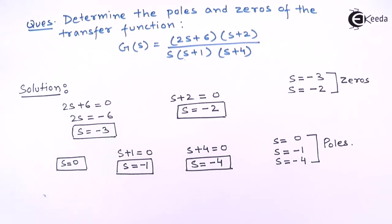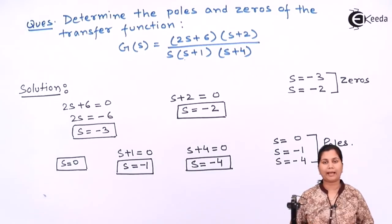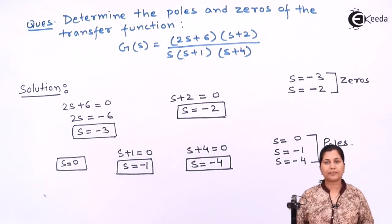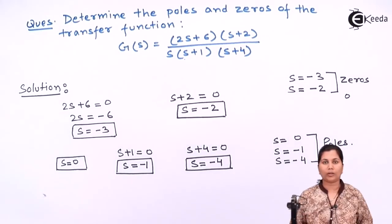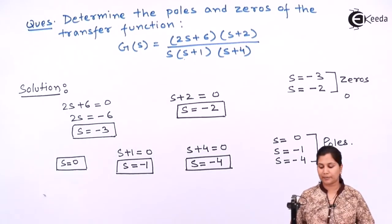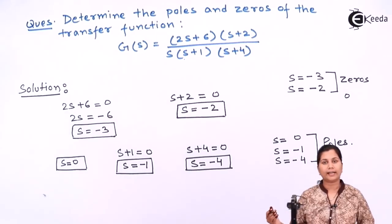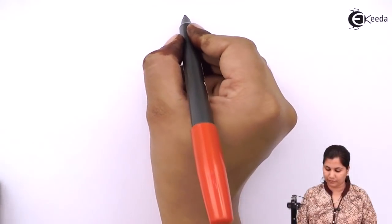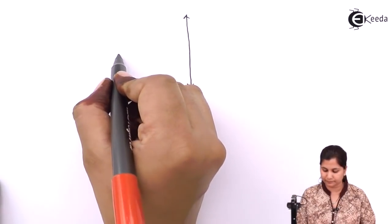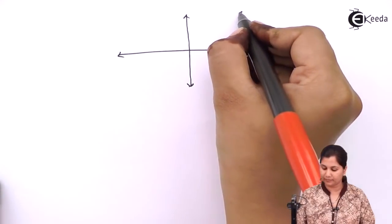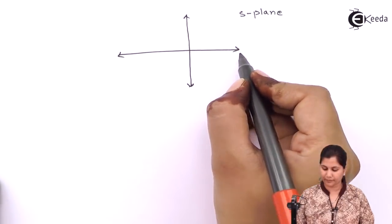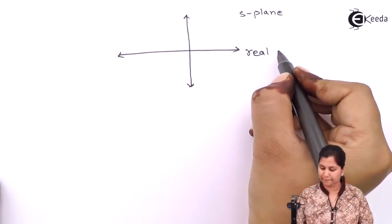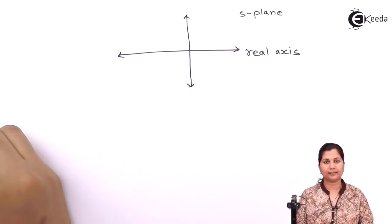If it is asked that you have to represent these poles and zeros on the s-plane, then how do you represent them? The zeros are represented by a circle on the s-plane, and the poles are represented by a cross sign on the s-plane. This is the s-plane, with the real axis and the imaginary axis.